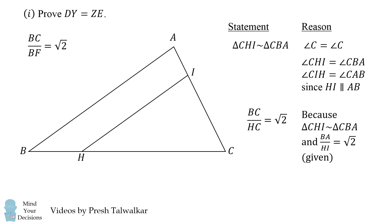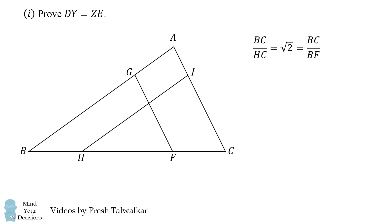So what can we do with this? Well, we have two different fractions that are equal to the square root of 2, so they must be equal to each other. Furthermore, their numerators are both BC. This means their denominators must also be equal. So we have HC is equal to BF.